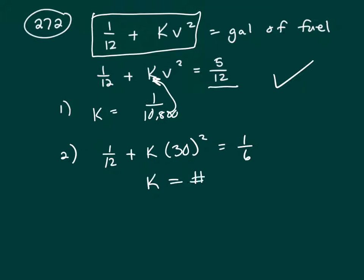K would equal some number, and as soon as I knew what that value for K was from clue two, I could plug it in right there—this is my equation—and I could solve it for V, just